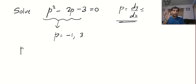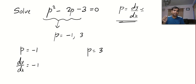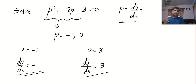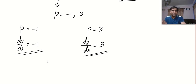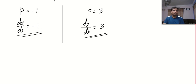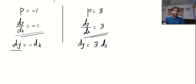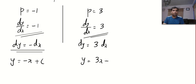Equate each value independently and use the fact P stands for dy by dx. You got two differential equations. The first and second differential equations can be variable separable, linear, homogeneous — anything from first order differential equations. Here both are variable separable, so things are really easy. dy equals minus dx, and dy equals 3 dx. Integrating, we get y equals minus x plus c, and y equals 3x plus c. That is, x plus y minus c equals 0, and 3x minus y plus c equals 0.